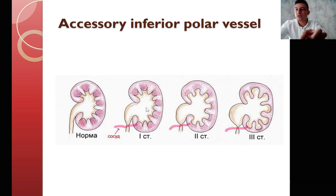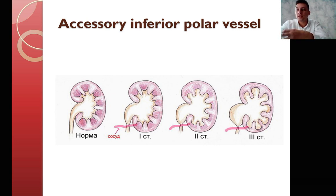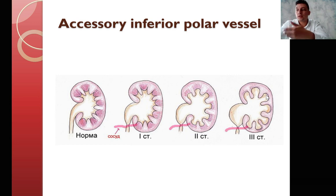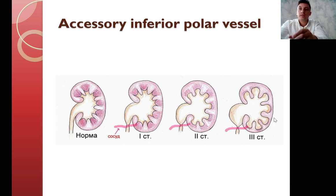The first stage is the formation of pyelectasia, or enlargement of the renal pelvis. The second degree involves pyelectasia with enlargement of the calyxes and renal pelvis without loss of kidney function. The third stage is the presence of pyelectasia with thickening of the renal parenchyma and decreasing of kidney function. We also have a fourth stage — terminal hydronephrosis with a non-functioning kidney and hydronephrotic transformation of the whole kidney.